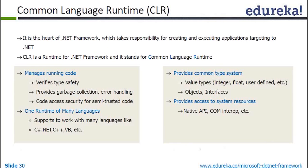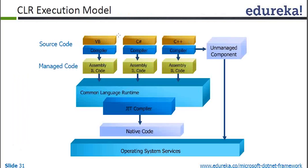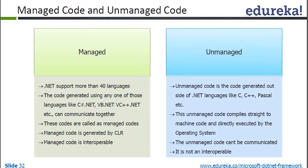CLR is an execution model. Every programming language will compile, and the compiled language generates IL code. The IL code takes the support of JIT, and JIT converts it into native code, which is the operating system's understandable code. The code in .NET is separated into two types: managed codes and unmanaged codes. Languages like C#.NET, VB.NET, VC++.NET are managed codes. Any language not supported by .NET is called unmanaged code, and unmanaged codes cannot communicate with .NET.